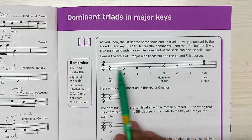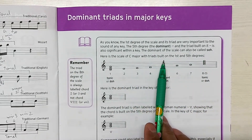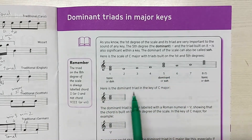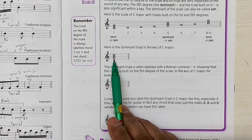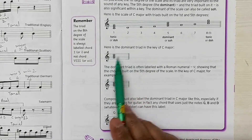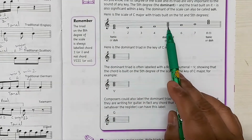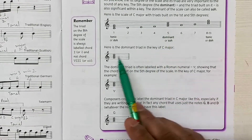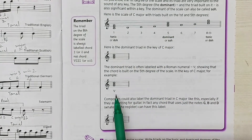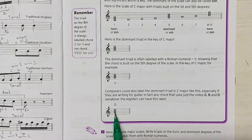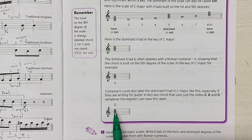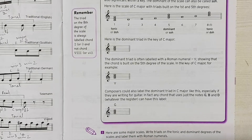Here is a C major scale with triads built on the first and fifth degrees. You can see this example — this is the C major scale, and here is the dominant triad built from the fifth degree, which is G. From G, you build the triad, and you put the Roman numeral five over it, or show the root note G with the fifth dominant note on top.